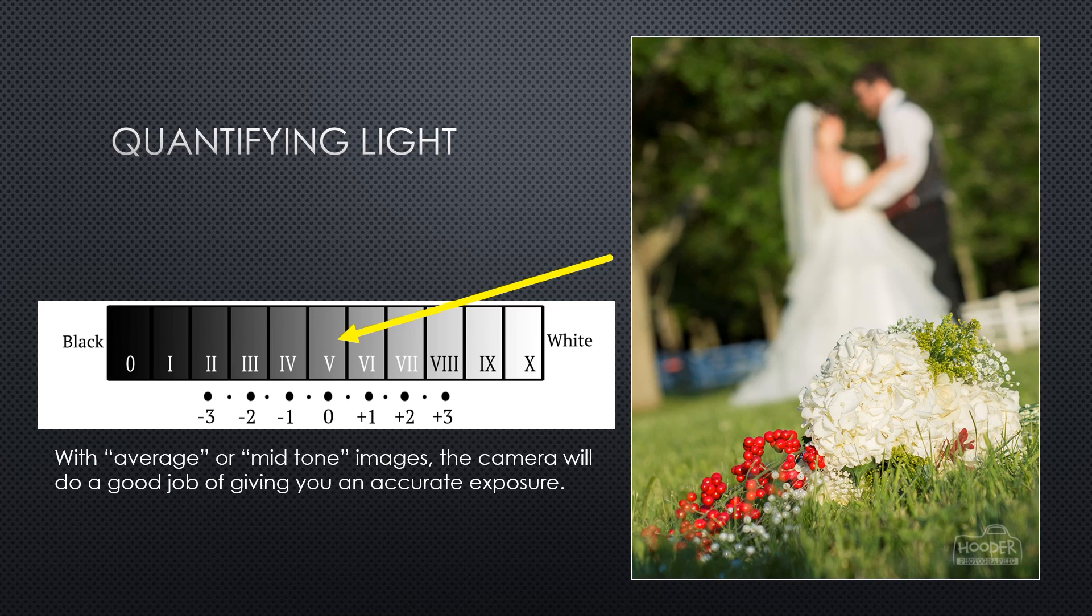Now, this works really well for these average toned images. If we were to take all of the colors, all of the tones, lights and darks, blend them all together into some middle color, average color, for the whole scene, it would average out around Zone 5. Our cameras are calibrated so that all of our images average out to about Zone 5. So if we were to capture this image with a regular point and shoot camera, as far as the lights versus darks, the camera would capture a pretty accurate exposure.